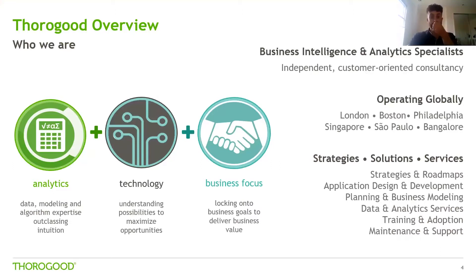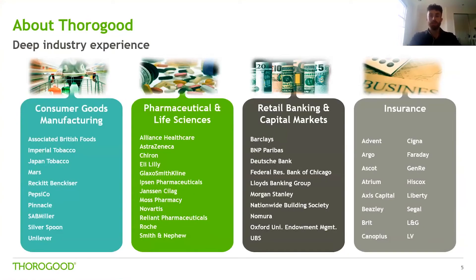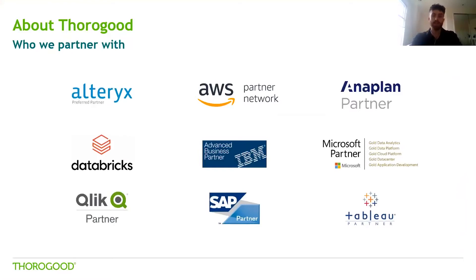We offer a range of BI and analytic services, including strategy and roadmaps, requirements, design, implementation, and training and support. We work with a number of blue-chip customers drawing from a range of sectors — most commonly consumer goods, pharma and life sciences, financial services, and insurance, but we are not limited to these. We are an independent consultancy, which means we work with a range of technology partners, and our consultants are knowledgeable and experienced in a range of technologies and the way that those technologies can be integrated successfully.